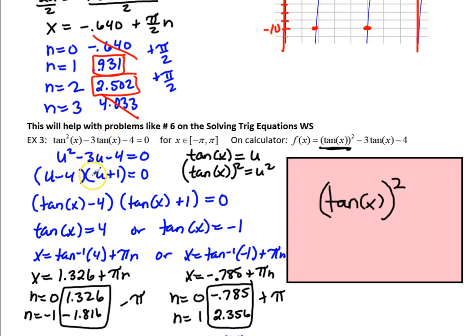I could factor it into u minus 4, u plus 1 equals 0. So that would be the same as tangent of x minus 4 times tangent of x plus 1 equals 0. So then I can say tangent of x minus 4 equals 0, which means tangent of x equals 4. Tangent of x plus 1 equals 0, which means tangent of x equals negative 1. And then I solve each of these individually using the same method I did in the previous problem.